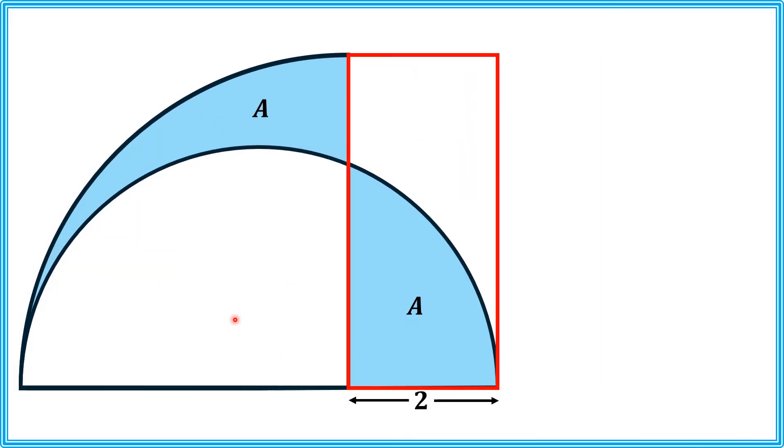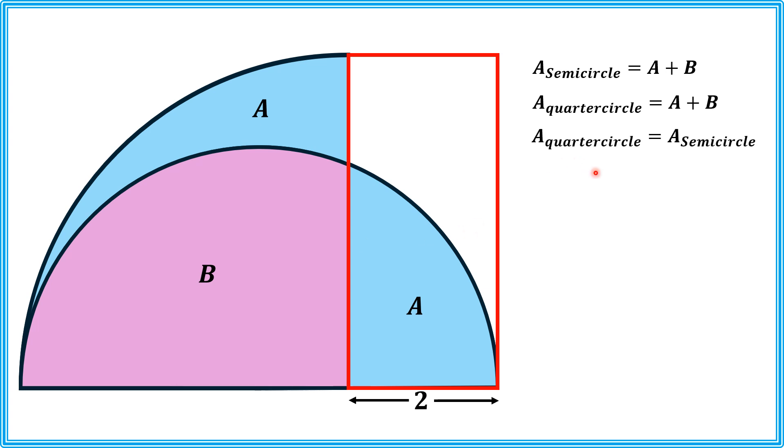Let's call this area as B. Then we can see that area of semicircle is A plus B and also area of this quarter circle is A plus B. It means area of quarter circle is equal to area of this semicircle.